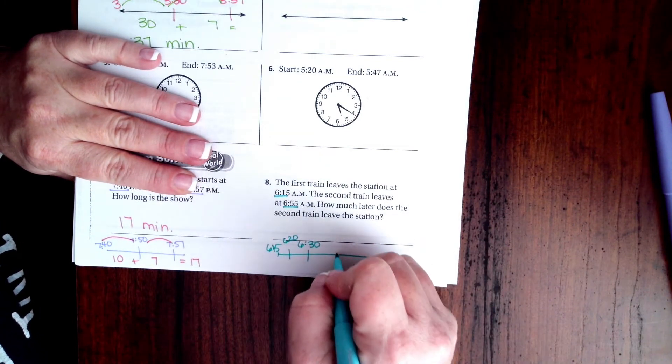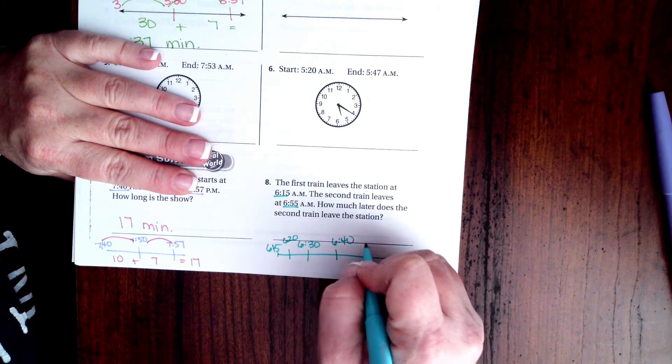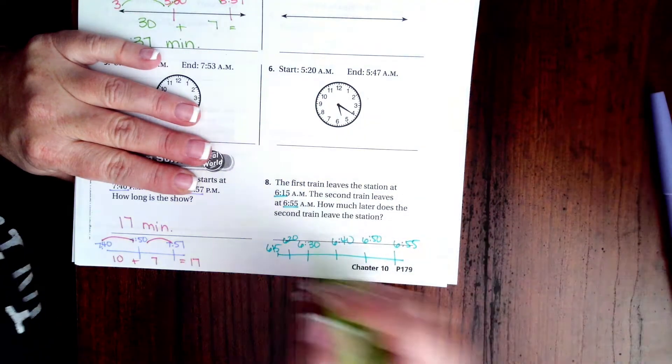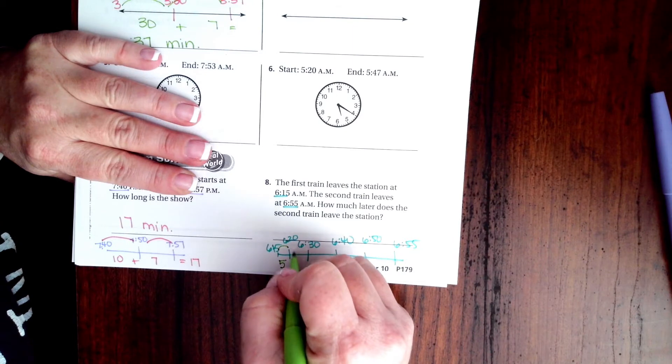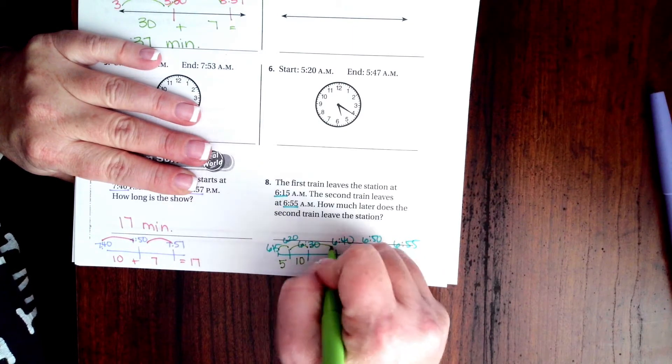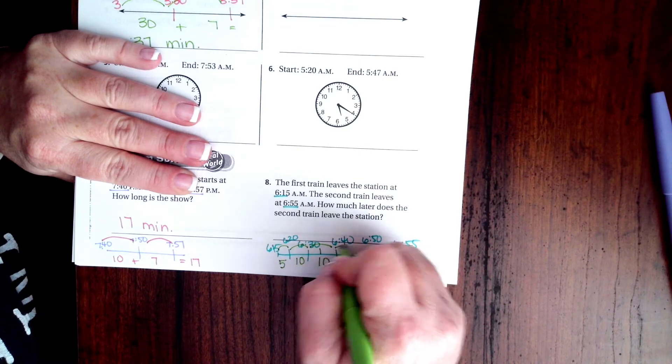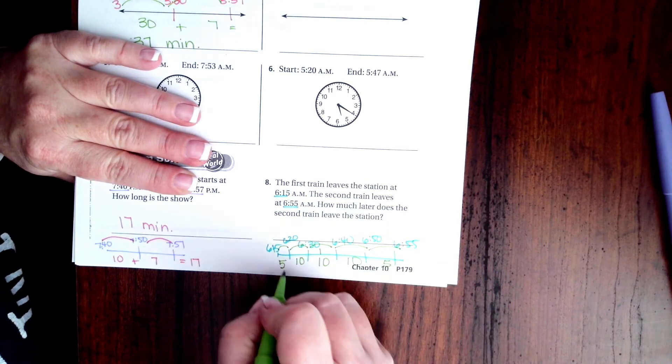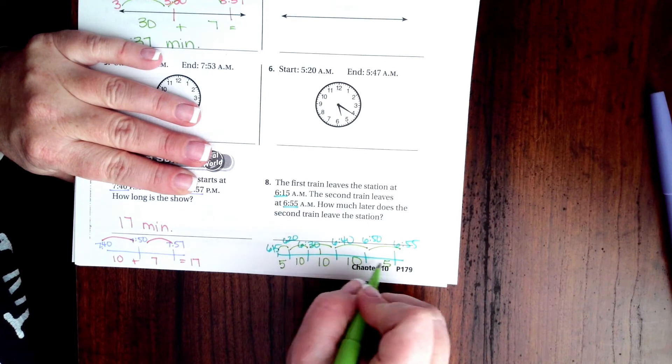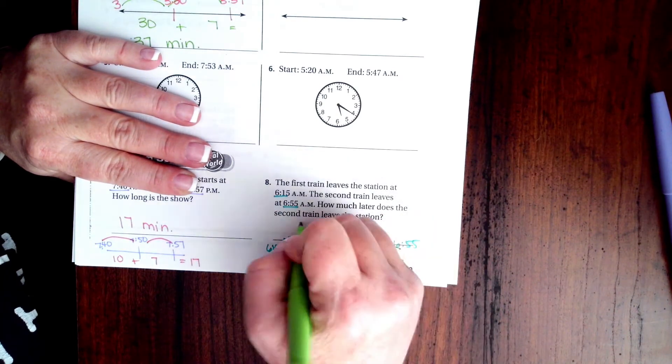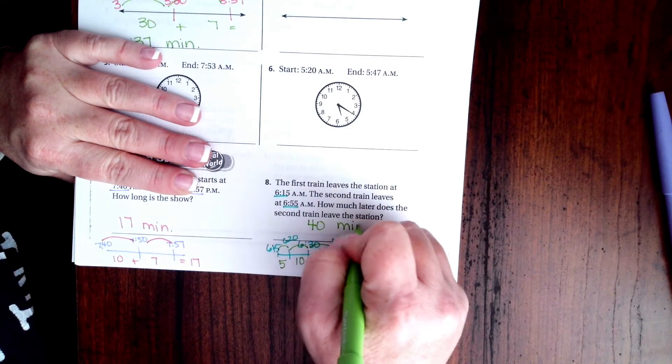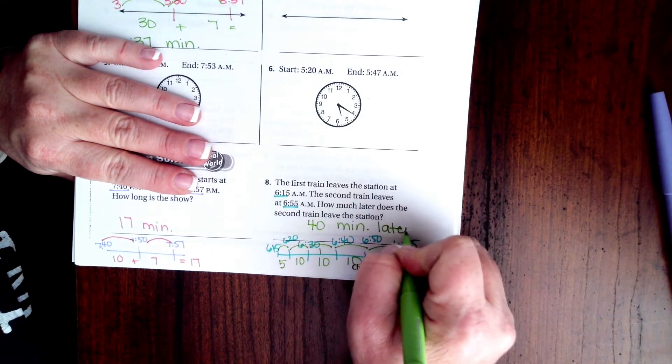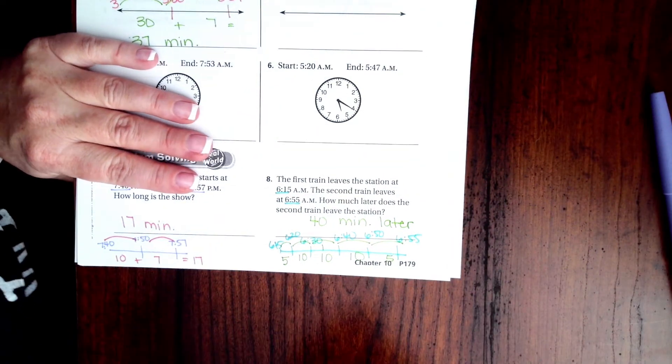Sometimes it's easier. Let's do 6:40, 6:50, and then 6:55. So here's five minutes, here's another 10, here's another 10, here's another 10, and then there's another five. So I have 10, 20, 30, and then five and five is another 10, so that's going to be 40, 40 minutes. And it's going to be 40 minutes later because it says how much later.